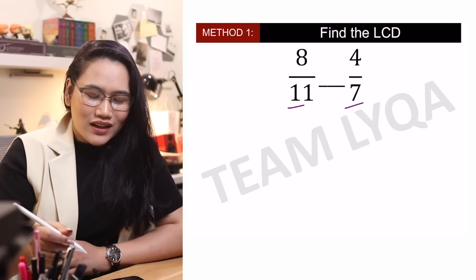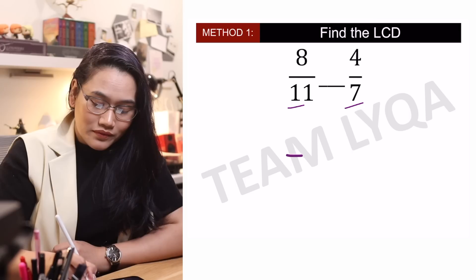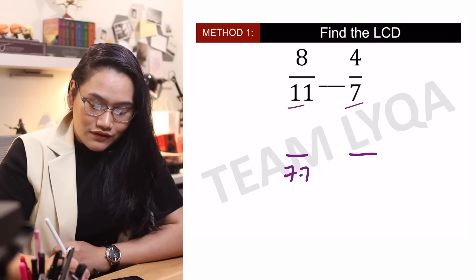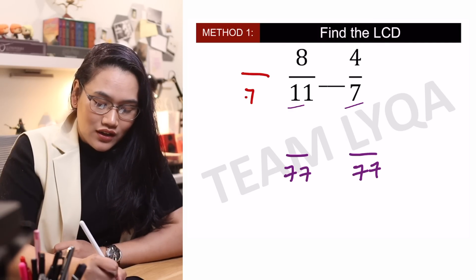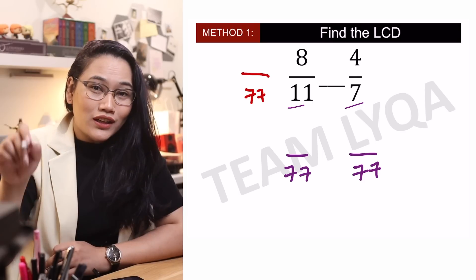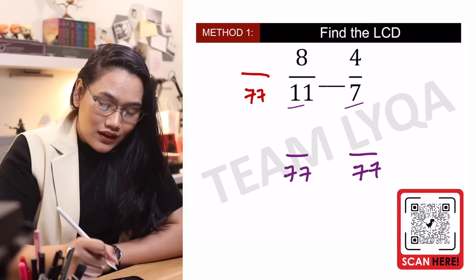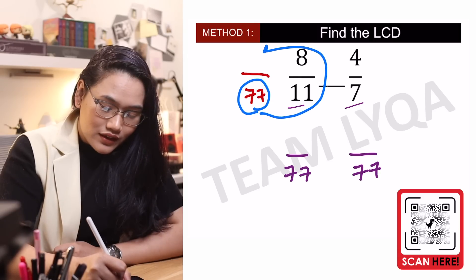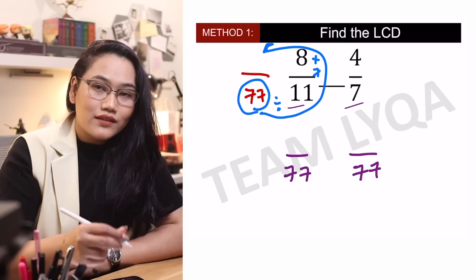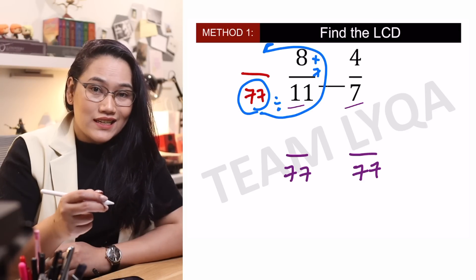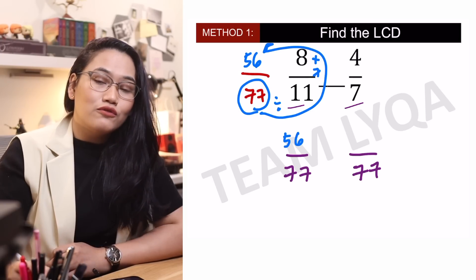Yung 11 at 7, parehong prime number. So ang gagawin lang natin to figure out yung least common denominator is gagawin natin sila parehong 77. How do we do that? Para mas simple, itatabi na natin siya. Kung gusto natin maging over 77, iikotin lang natin siya parang ratio rotation. May lesson tayo on transforming fractions — ili-link ko na lang din. Iikotin lang natin siya: 77 divided by 11 is 7, times 8 — that would be 56. Ibig sabihin nun, ang 8 over 11 ay equivalent sa 56 over 77.